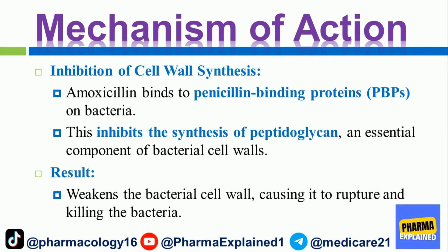Mechanism of action — inhibition of cell wall synthesis. Amoxicillin binds to penicillin-binding proteins (PBPs) on bacteria. This inhibits the synthesis of peptidoglycan, an essential component of bacterial cell walls. Result: it weakens the bacterial cell wall, causing it to rupture and killing the bacteria.